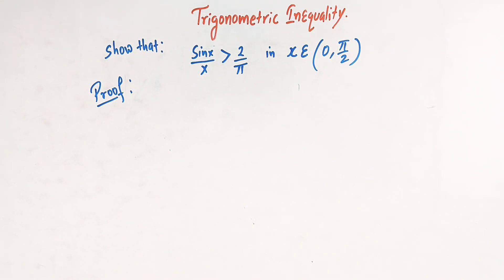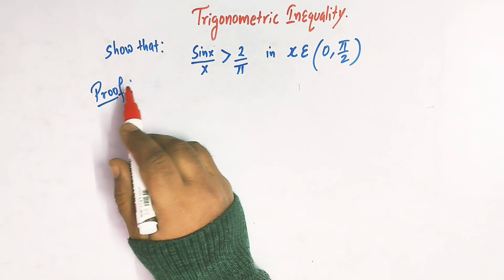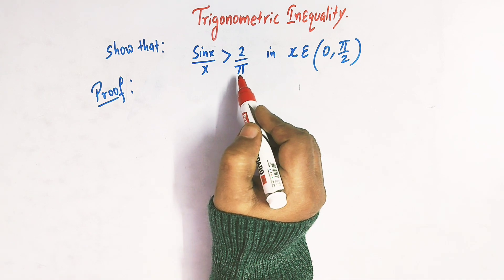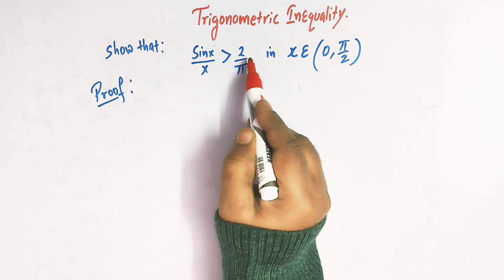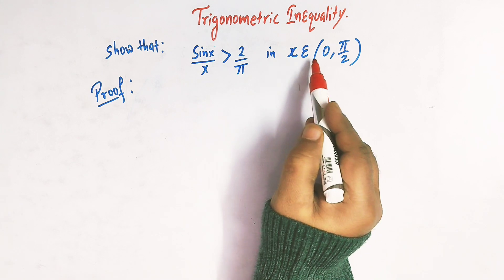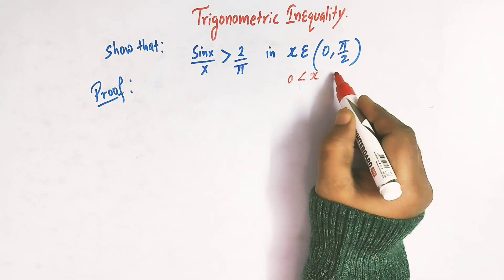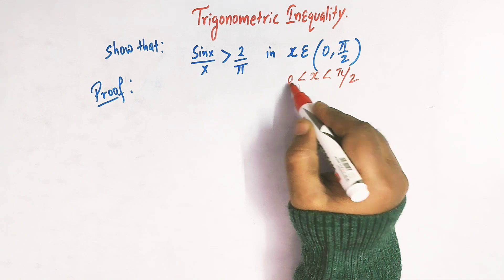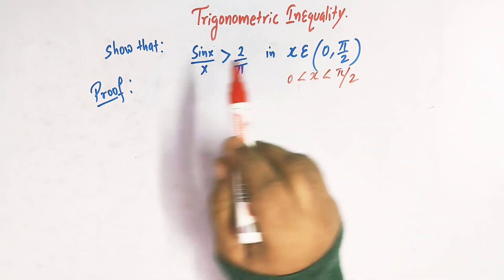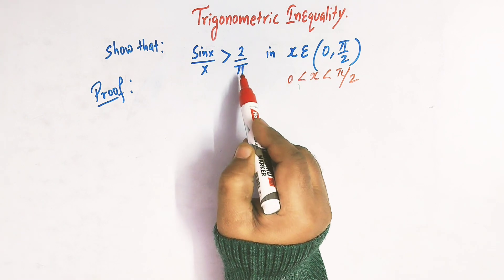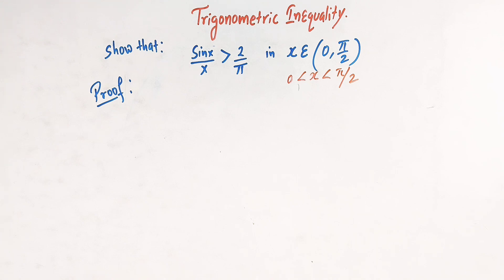Hello viewers! In today's class, we are going to discuss one important trigonometric inequality. So here in this session, we are going to prove this important trigonometric inequality, that is sin x over x is greater than 2 over pi, when x belongs to the interval 0 to pi by 2. So when x lies between 0 and pi by 2, then this inequality holds. So let us start.